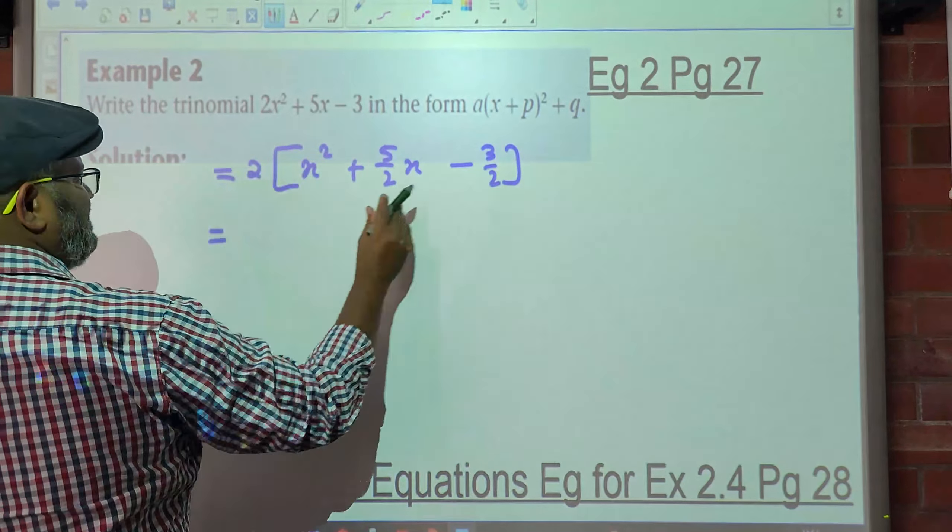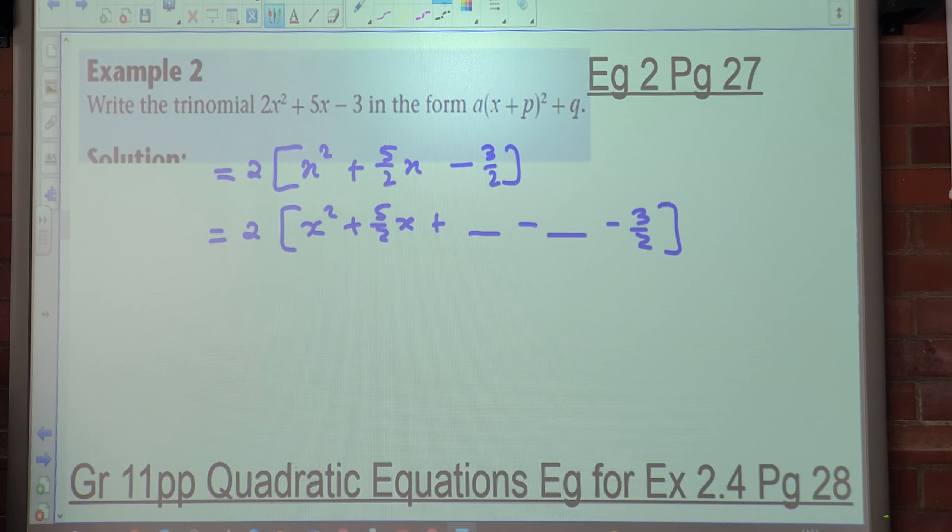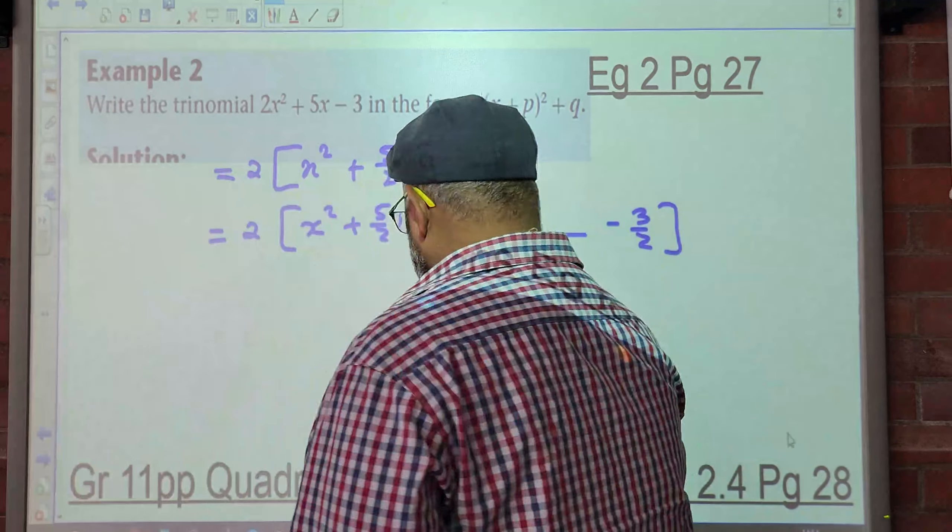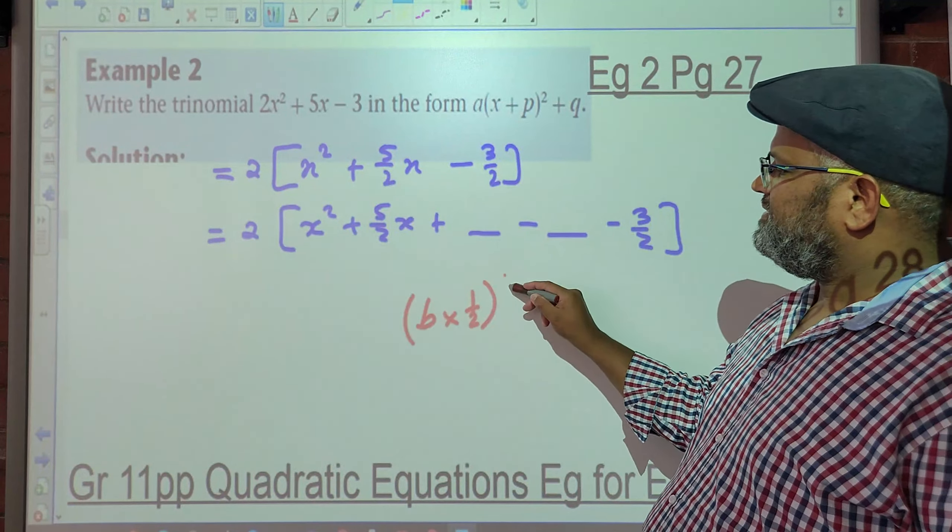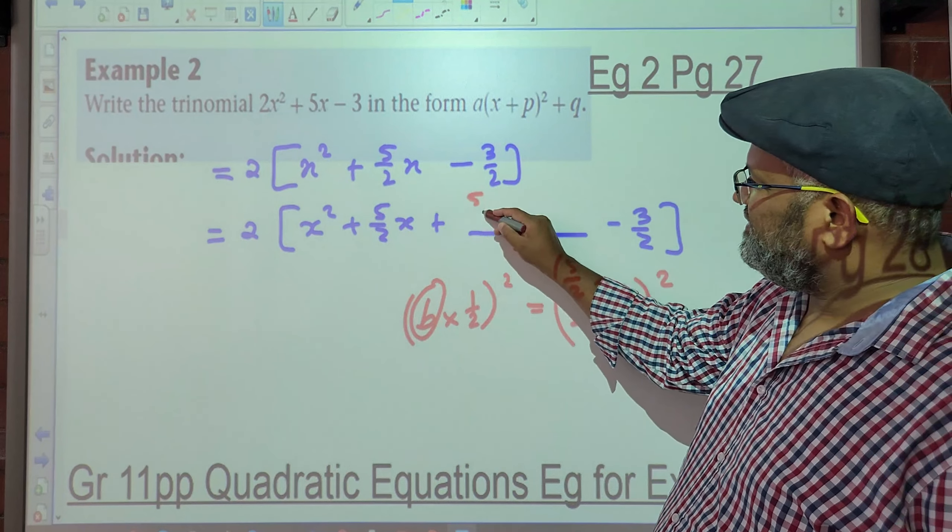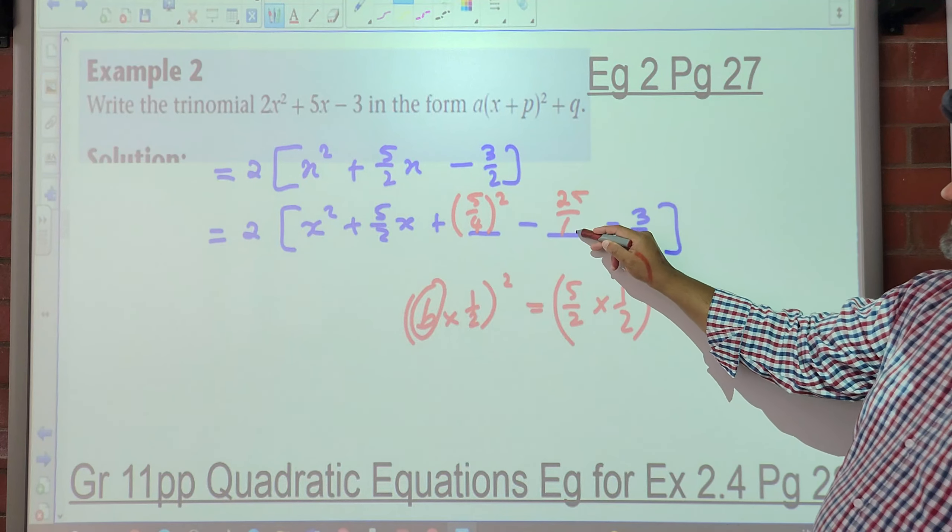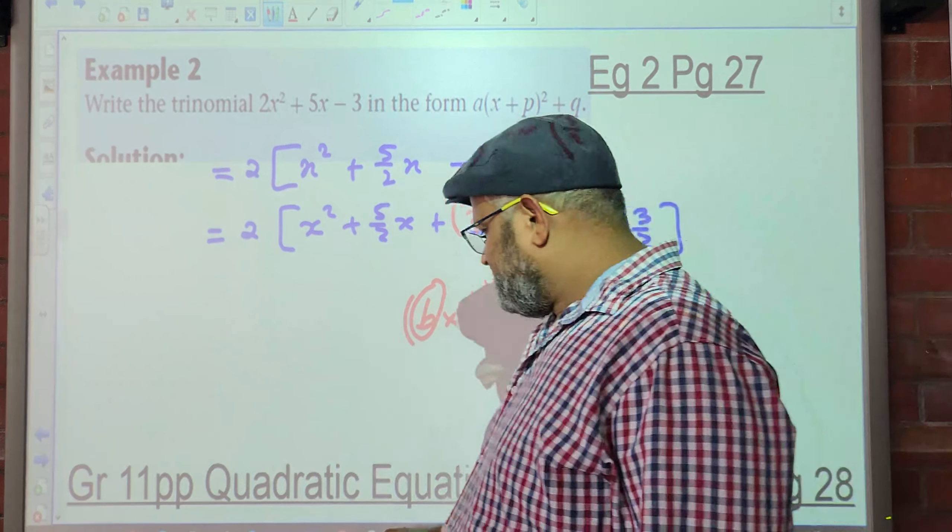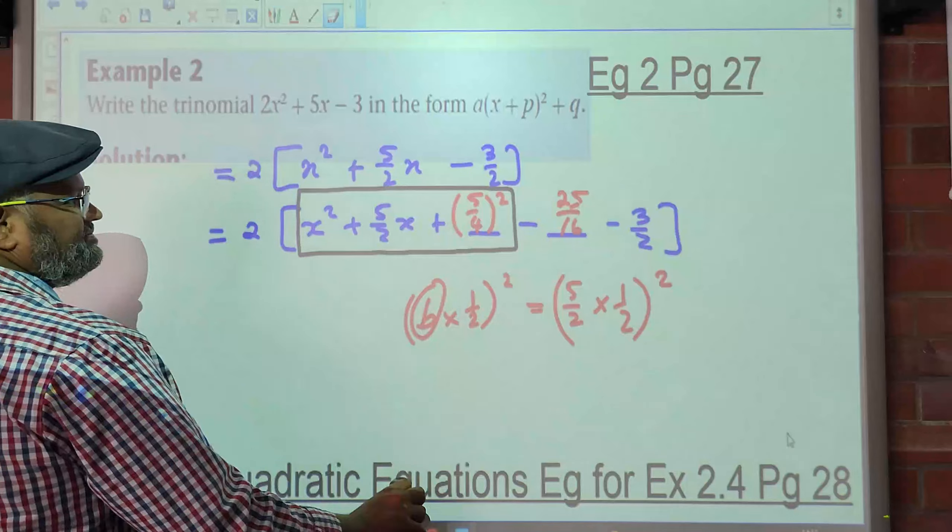So it's 2(x² + 5/2x plus a number minus the same number - 3/2). What is the number in this case? It must be b times a half and it must be squared. What's the b value? 5/2. So that's 5/2 times a half. What's 5/2 times a half? 5/4. And if I square that, what do I get? 25/16. And this again is what to us? Perfect square trinomial.